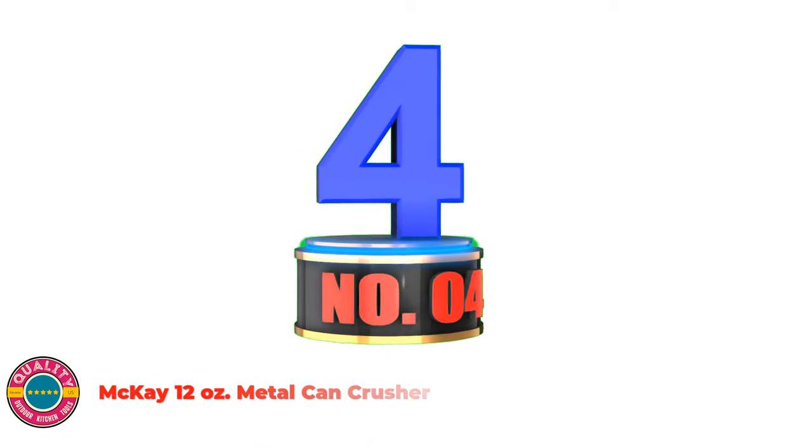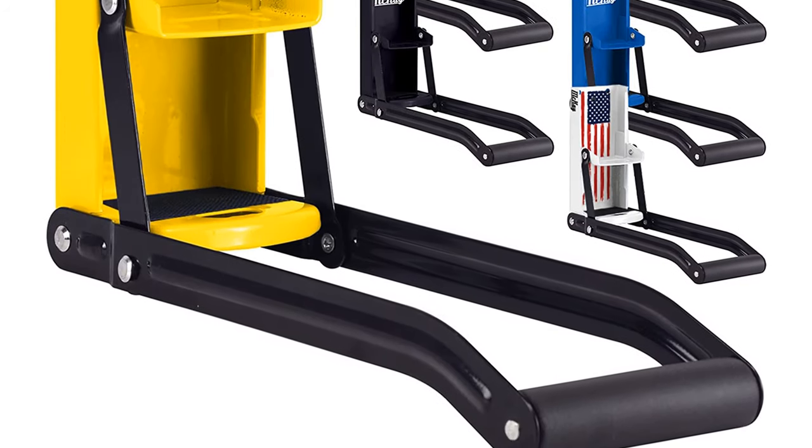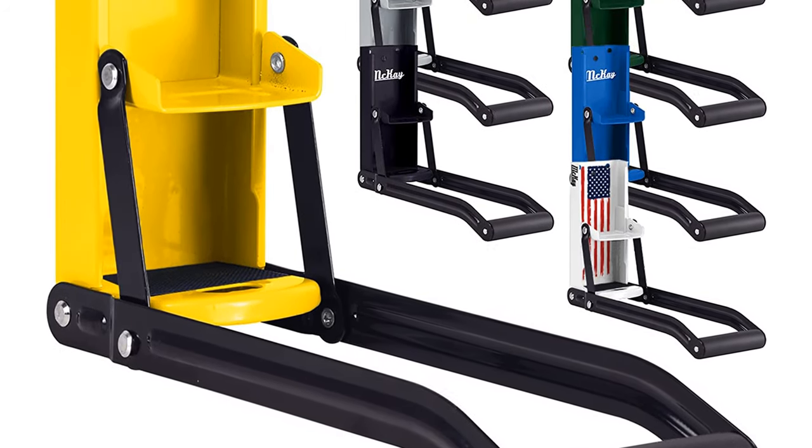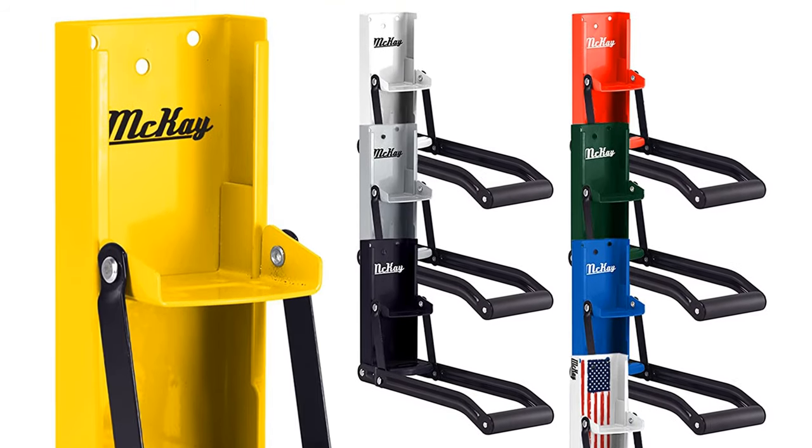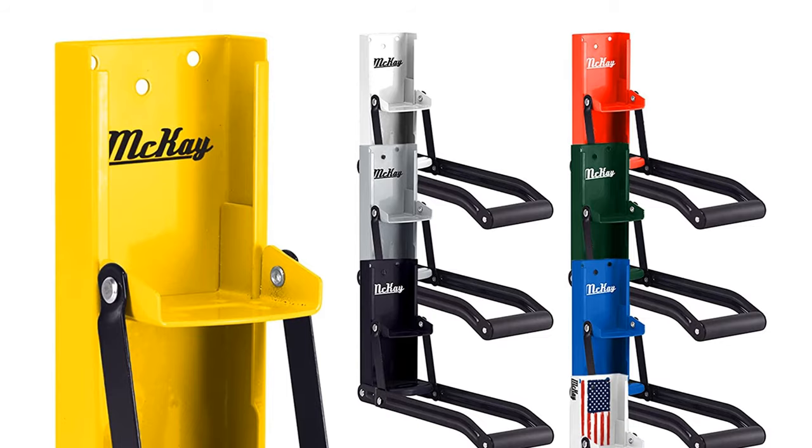Number four: McKay 12 ounce Metal Can Crusher. Easily crushes cans to save room in the garbage or recycling bin by compressing to approximately 20% of its original size. Recycle aluminum soda, pop, and beer cans. For use with standard 12 ounce aluminum cans.